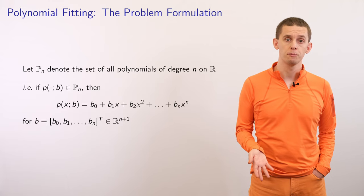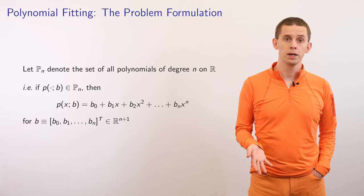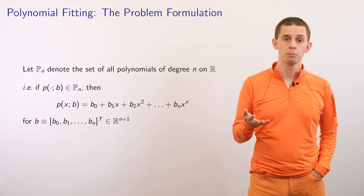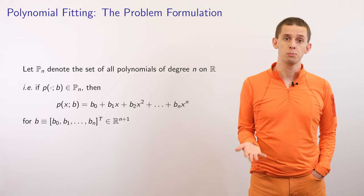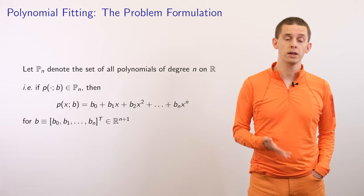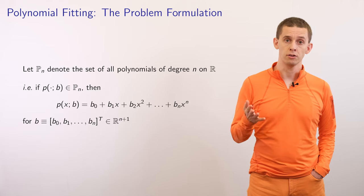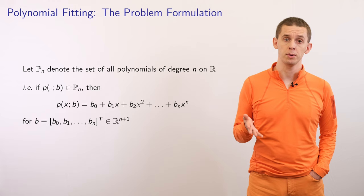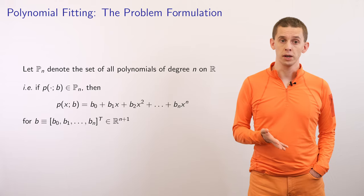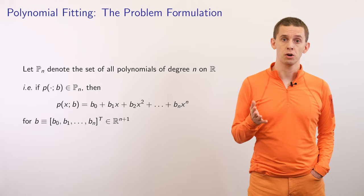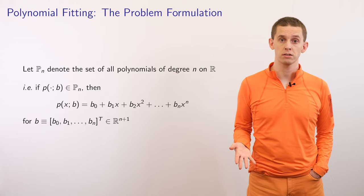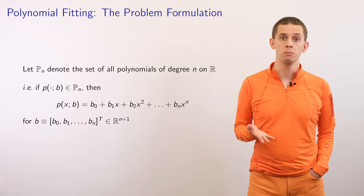Let's begin by looking at polynomial fitting. Let capital P of n be the set of all polynomials of degree n on the real numbers. A particular nth degree polynomial will be characterized by its coefficients b0, b1, up to bn. We can write a particular member as lowercase p, dependent on its parameters b, a vector of length n plus 1. Evaluating at x gives b0 plus b1 times x plus b2 times x squared, all the way up to bn times x to the n.